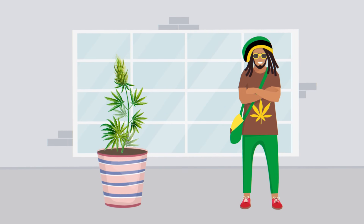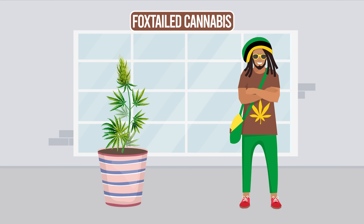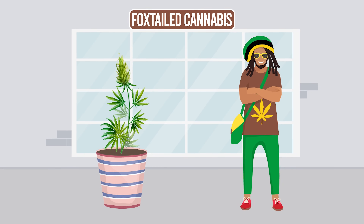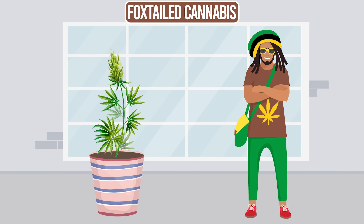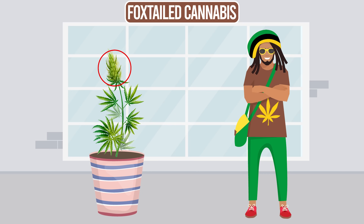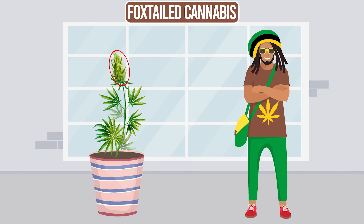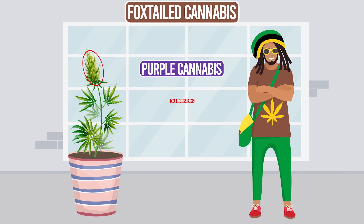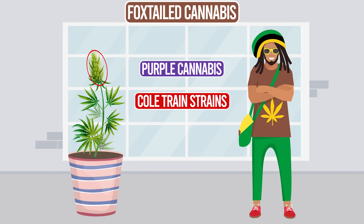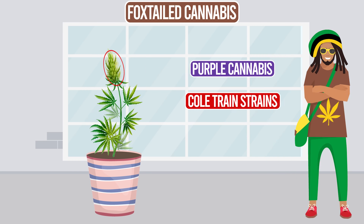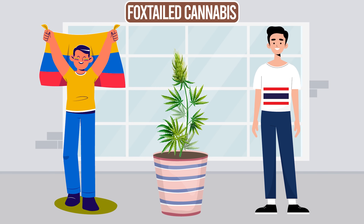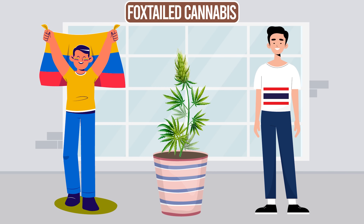Finally, we have fox-tailed cannabis. This mutation breaks up the bud structure of the plant. Instead of growing into a round shape, the bud spreads out in an elongated way. Some purple or Kush strains commonly produce fox-tailed bud structures, and strains from Colombia or Thailand also commonly exhibit these characteristics.